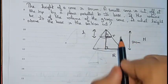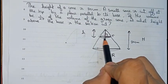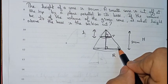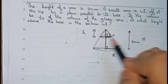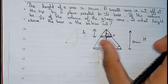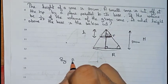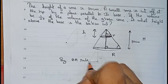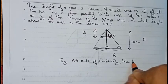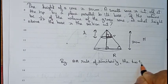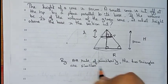Secondly, it is given that the plane is parallel to the base, so this line is parallel to this line. Therefore this angle will be equal to this angle. From here we have proved that both angles of the triangles are equal, and by the AA rule of similarity, the two triangles are similar.